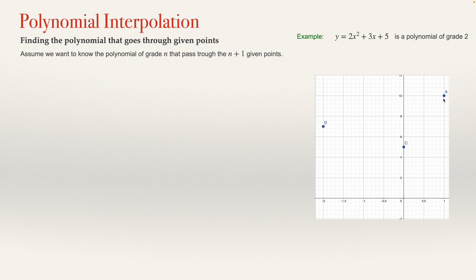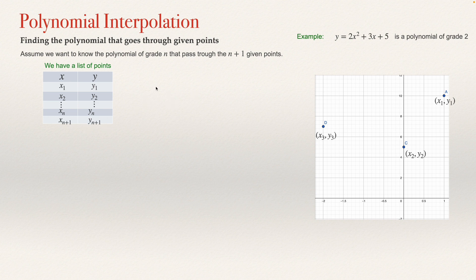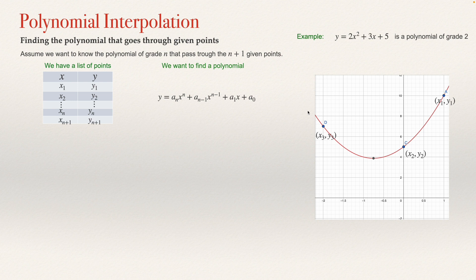Assume that we have 3 points, and what we are going to do is find a polynomial that passes through these points. These points will be given as (x1, y1), (x2, y2), (x3, y3). We can make a list in a table with values of x and y — from (x1, y1) up to (xn+1, yn+1). We have n plus 1 points and we are going to find a polynomial of grade n. When we have this polynomial, we will know the polynomial that passes through all the points we have.